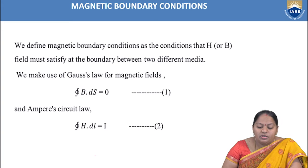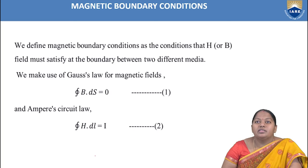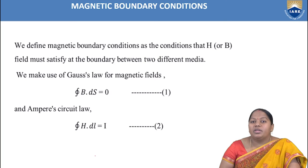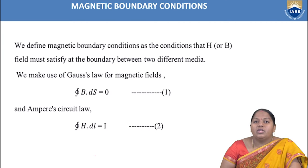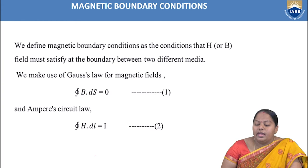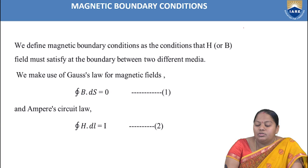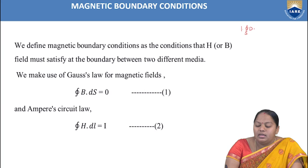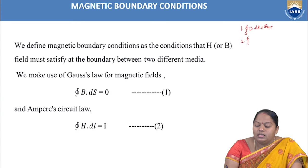The actual topic in this lecture is magnetic boundary conditions. As we discussed in electric fields — between two dielectric, homogeneous, or isotropic media — we considered three cases and used two Maxwell's equations to derive the boundary conditions. In electric fields, one Maxwell's equation is derived from Gauss's law: closed surface integral ∮D·dS = Q_enclosed.